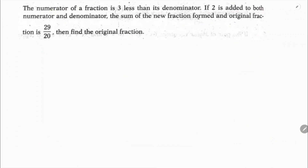The numerator of a fraction is 3 less than its denominator. If 2 is added to both numerator and denominator, the sum of the new fraction formed and the original fraction is 29 by 20.